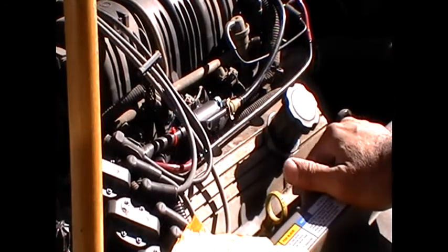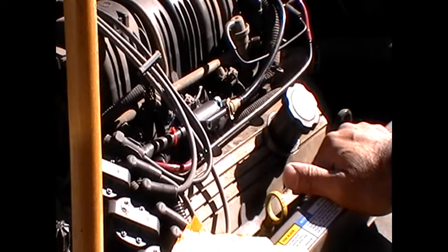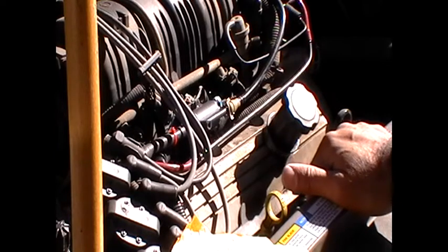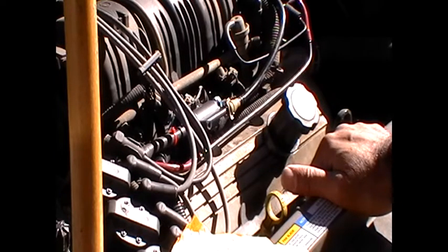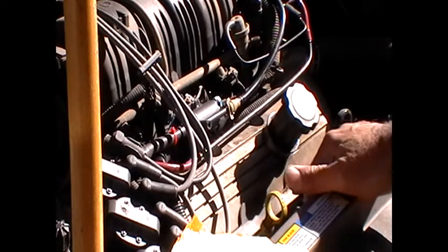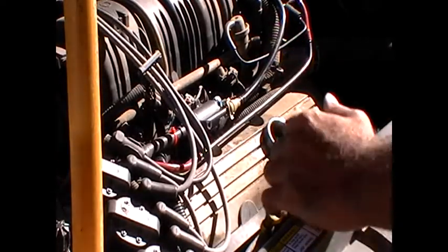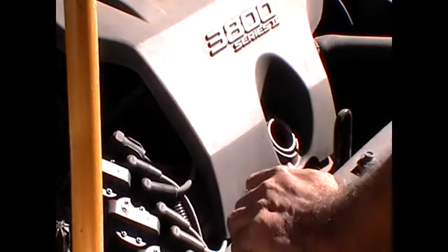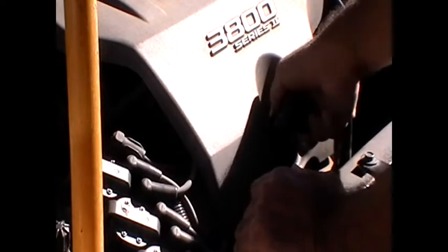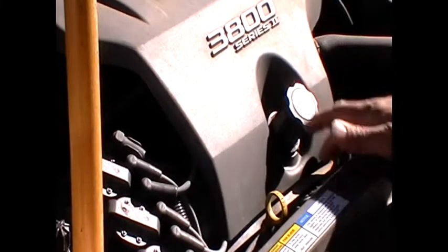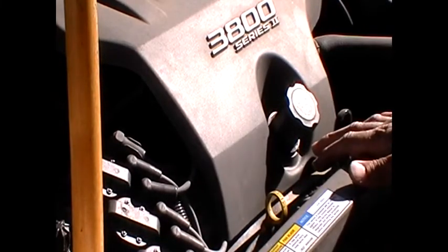That's how you replace an evaporative canister purge solenoid on a 3.8 liter Buick V6. This is actually a Pontiac, 2001 Pontiac Bonneville, but anything with a series 2 V6. Anything with a 3800 series 2 V6, this will take care of that problem.